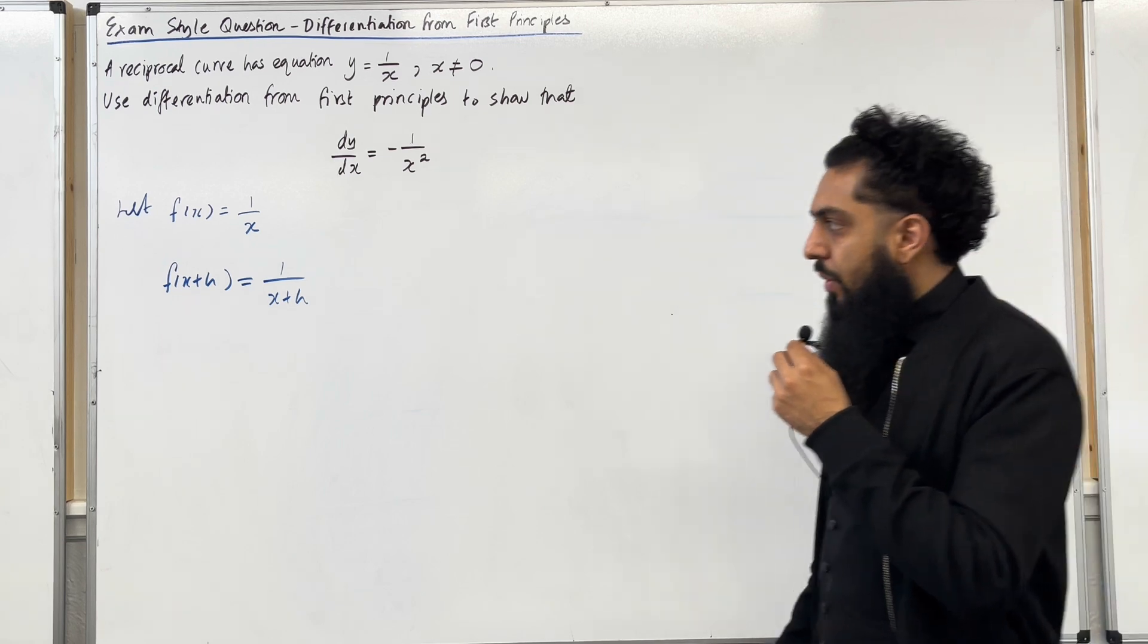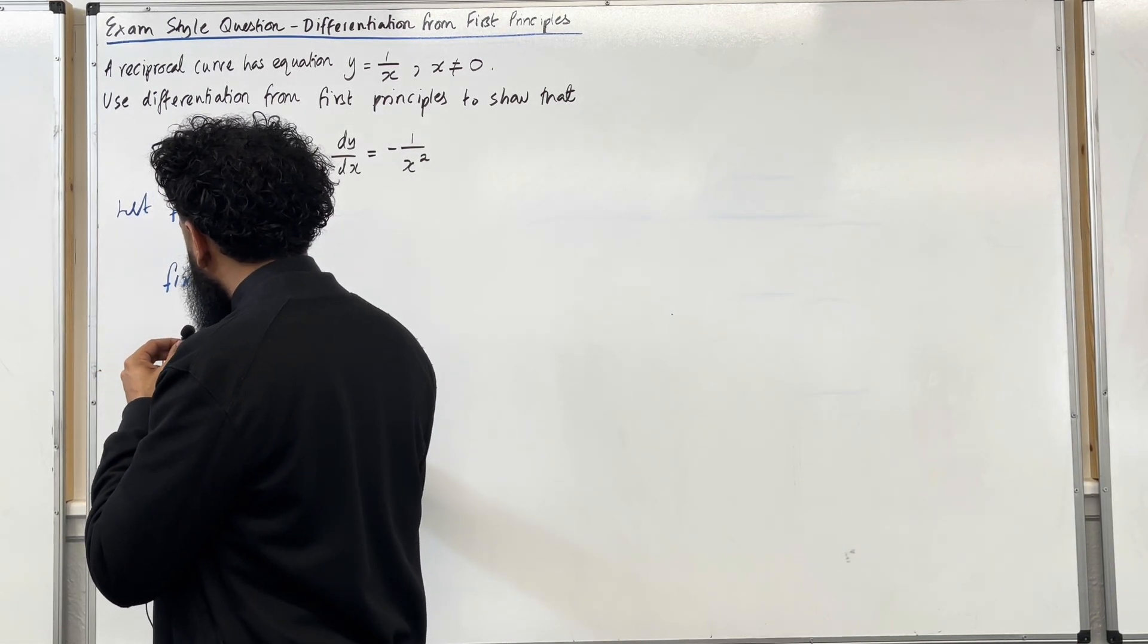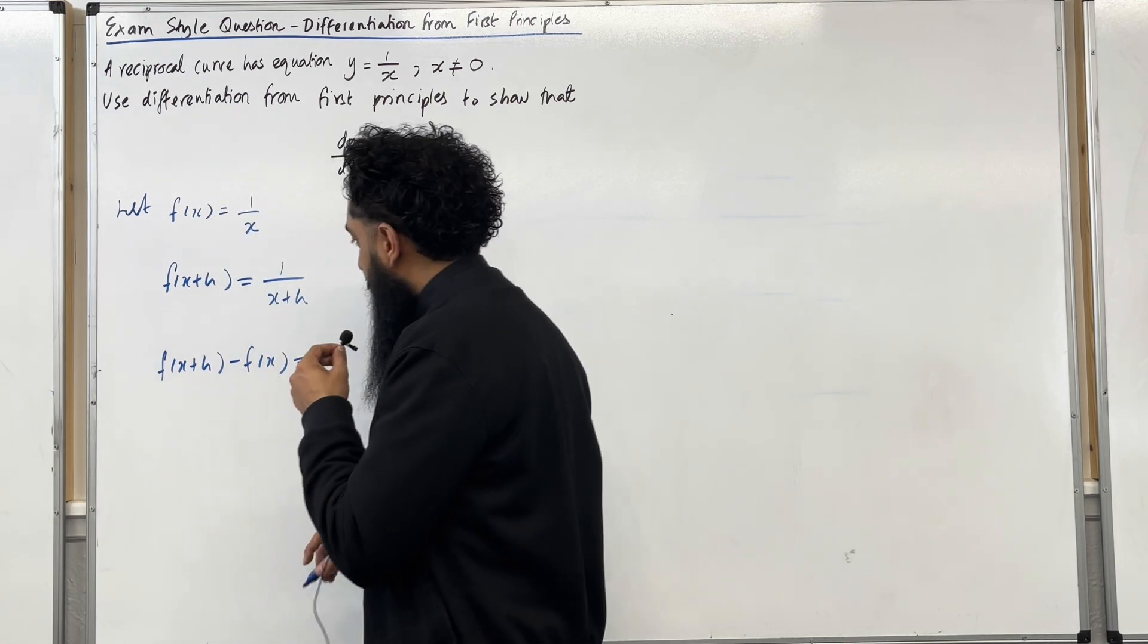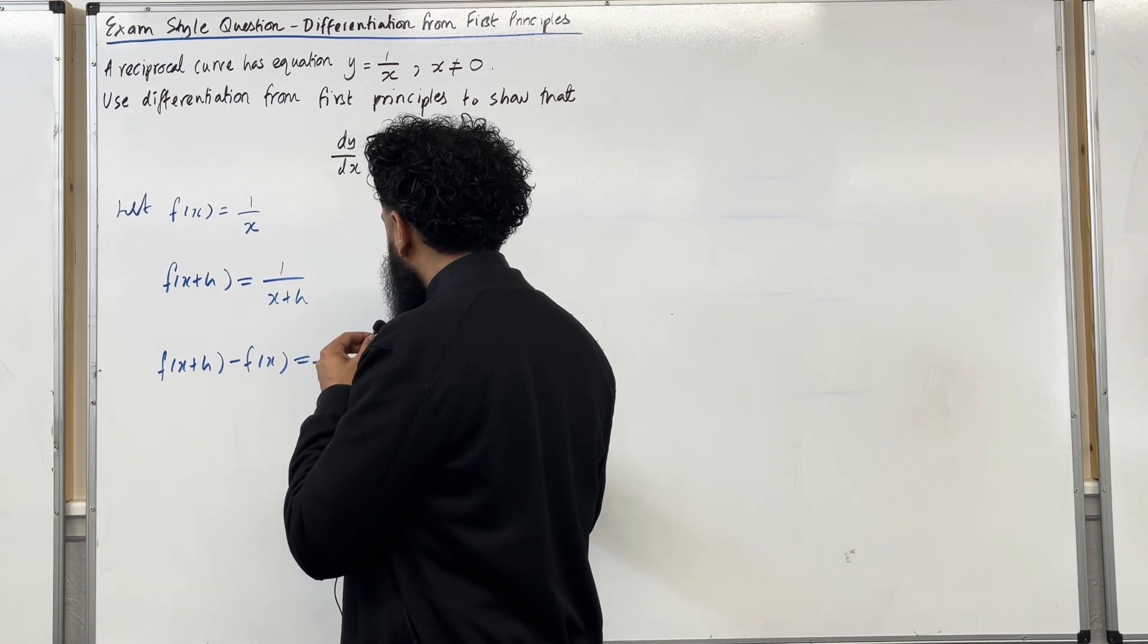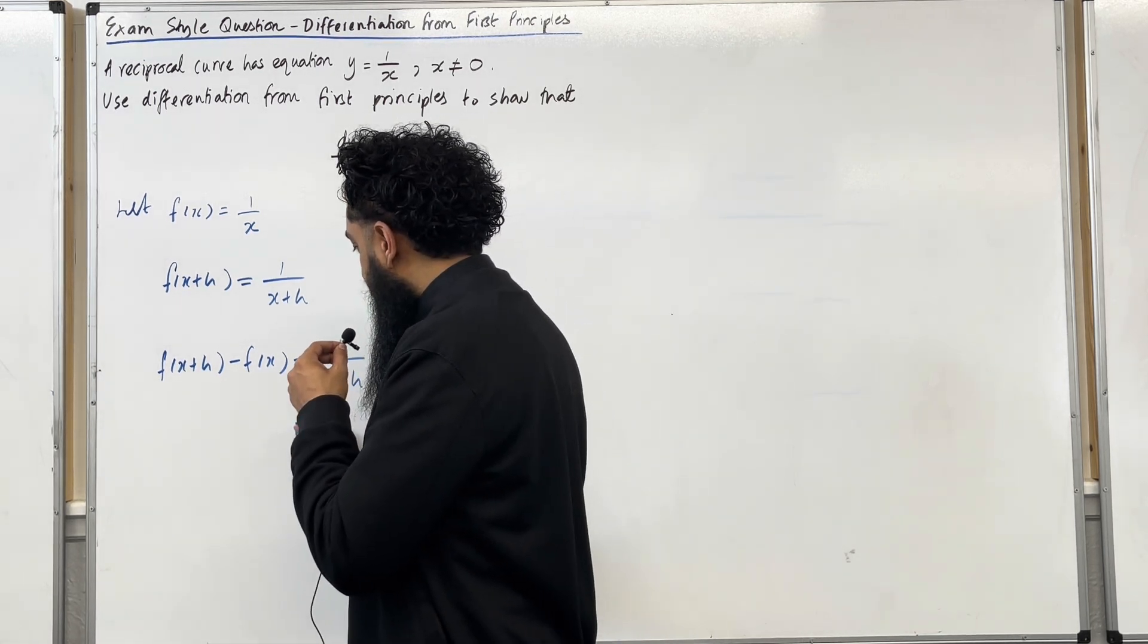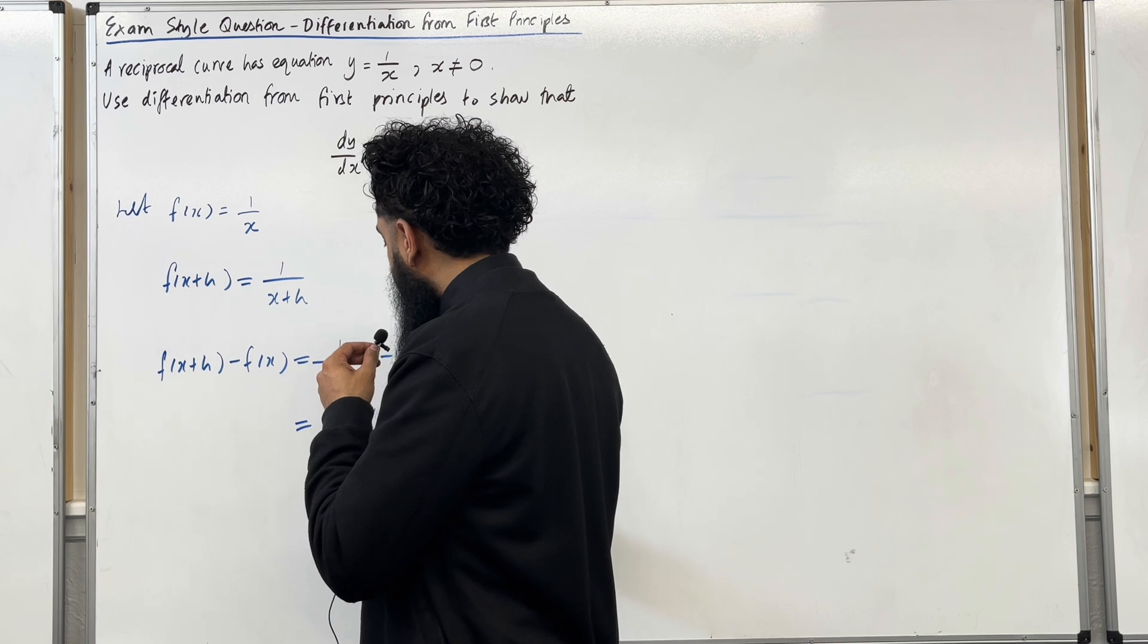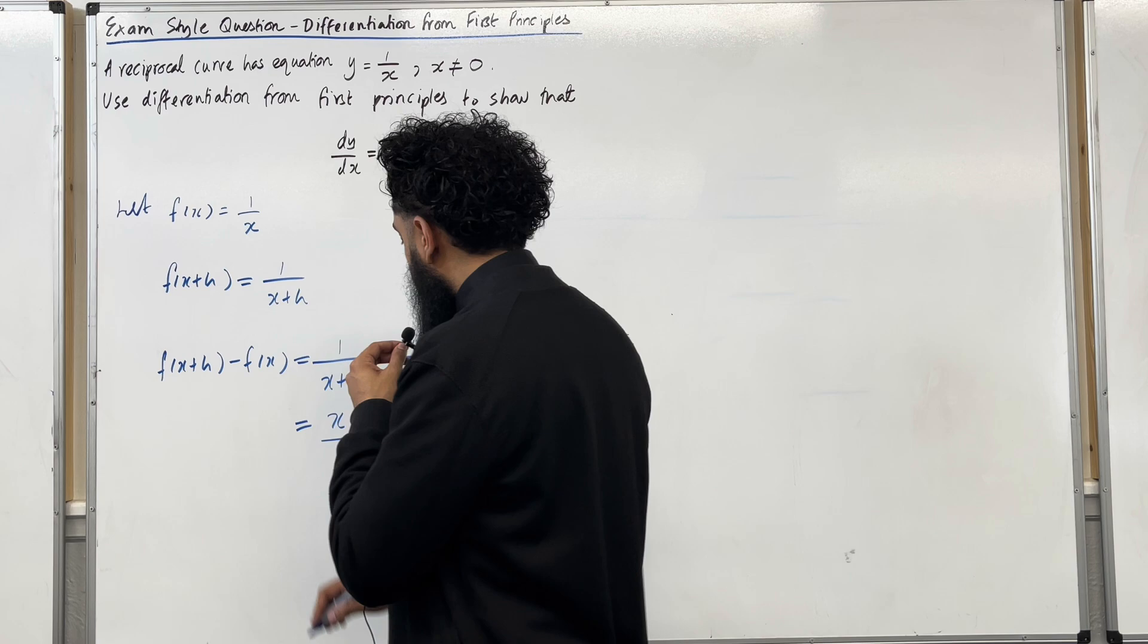Now I'm going to work out f of x plus h minus f of x. So this is equal to 1 over x plus h minus 1 over x. I can cross multiply to combine these two fractions. This gives me x minus x plus h all over x lots of x plus h.